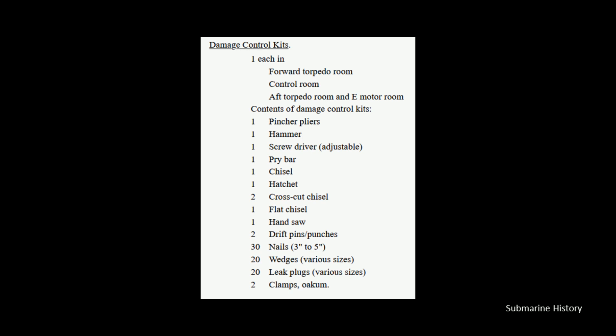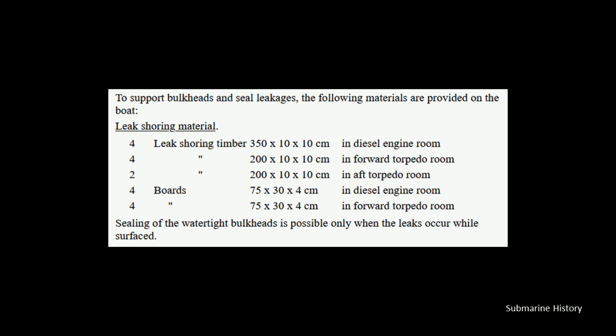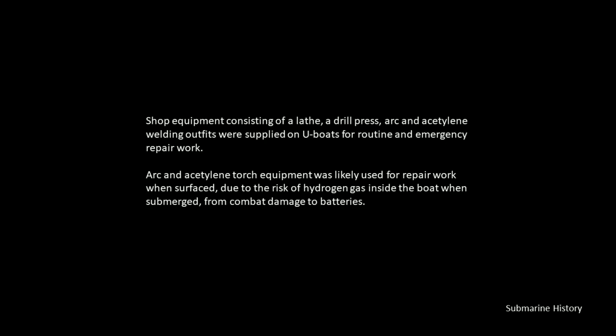In addition to the damage control kits, they would also have stored timber and boards so that if they had to do something like support a bulkhead or seal a hole in the pressure hull, they would have the materials on hand — they could just set it in place, secure it, and then try to continue operations or get out of dodge. In addition to the damage control parties, kits, and boards and timber, they would have had shop equipment on board consisting of a lathe, a drill press, arc and acetylene welding outfits, which would have been used for routine and emergency repair work.